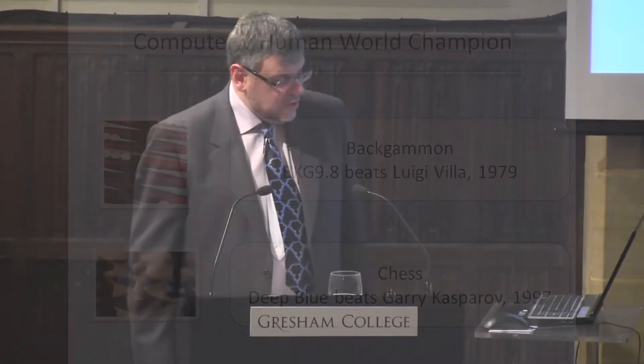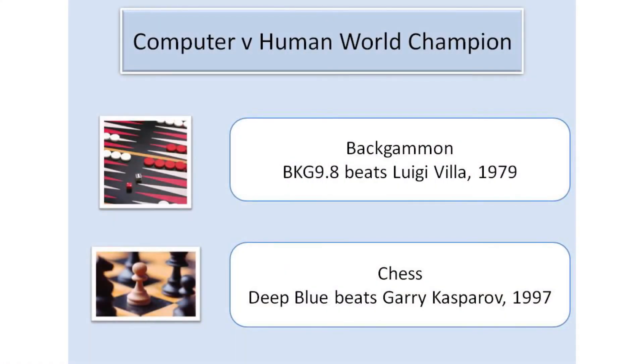Chess is a difficult game for computer programmers. The number of possible moves is so great that calculating all possible moves far ahead requires an enormous amount of computer time — that's not the way humans play chess. Computers could be programmed to play other games which are perhaps simpler. It is in backgammon that a computer first beat a human world champion.